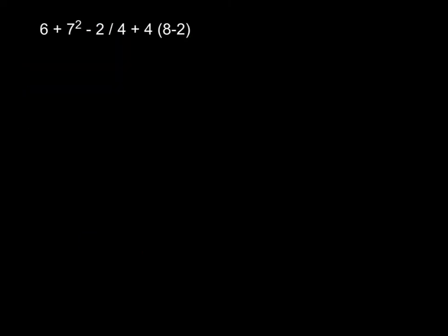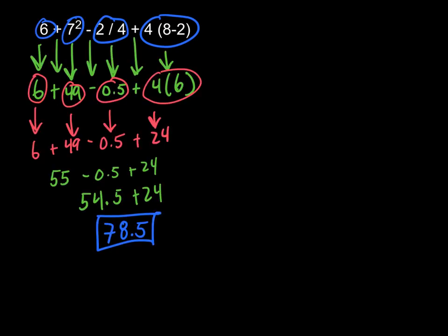6 plus 7 squared minus 2 divided by 4 plus 4 times the difference of 8 and 2. And here's how I would circle my terms. And then here's how I would solve it. You can see where I drew all the arrows. You can see where each part is carried down. You don't have to draw the arrows if it's going to be a distraction to you. But do circle each piece. That is important.